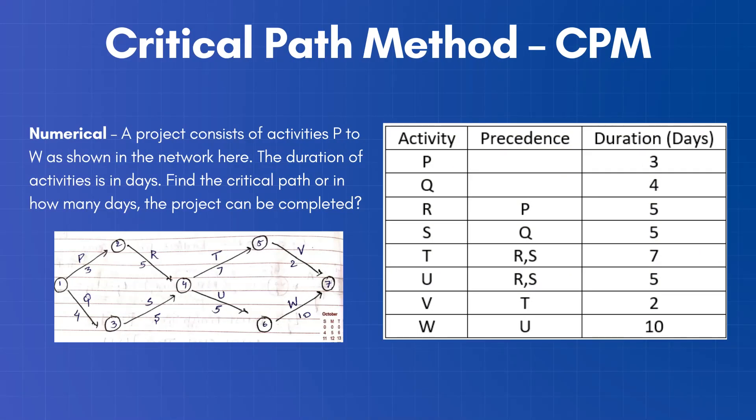The path which takes the maximum time is called a critical path. Let's understand the critical path method with the help of an example. A project consists of activities P to W as shown in the network here. The duration of activities is in days.